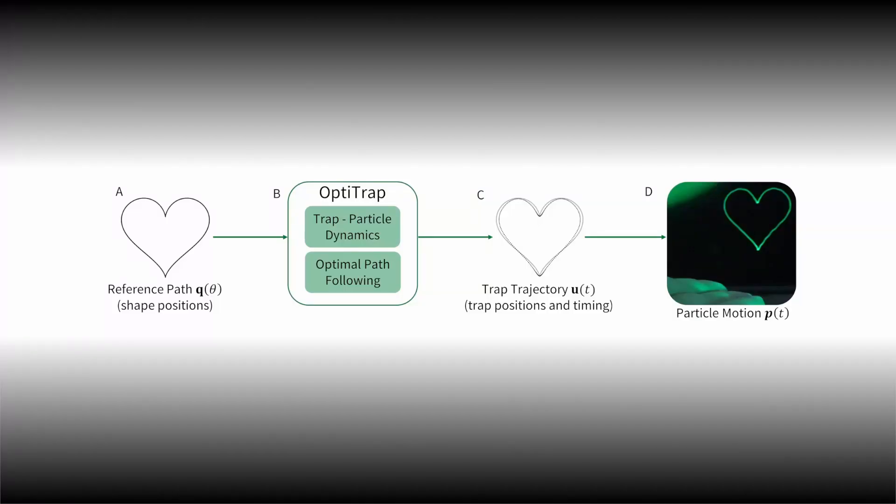Our approach takes a generic reference path as an input with no temporal information. Then, we formulate a path-following problem which computes the optimal timing in which a particle can traverse such path, taking into account the trap particle dynamics. The output is a trap trajectory with positions and timing of the traps that cause the particle to reveal the target shape in accordance with the capabilities of the device.